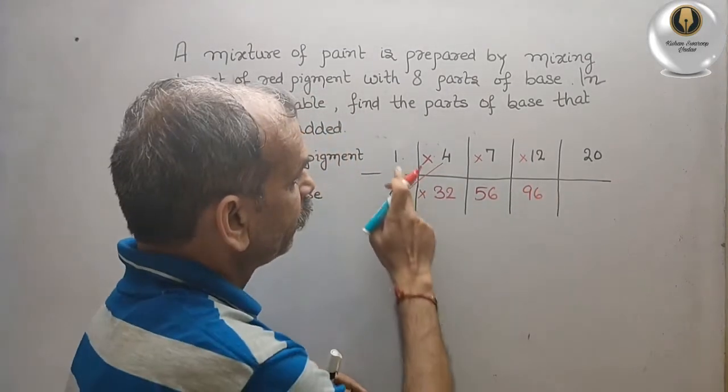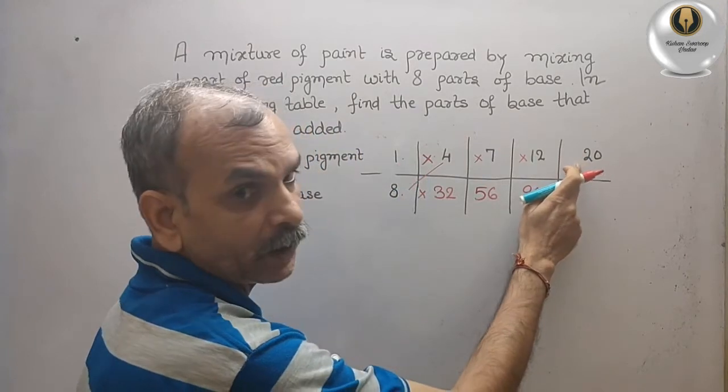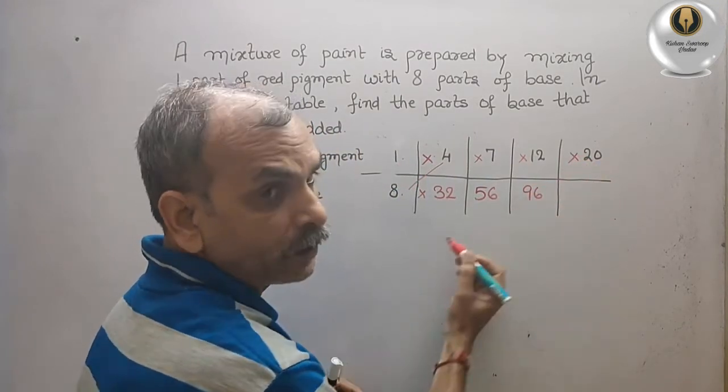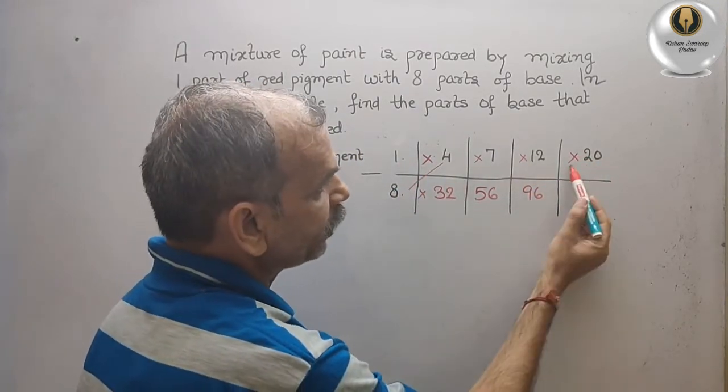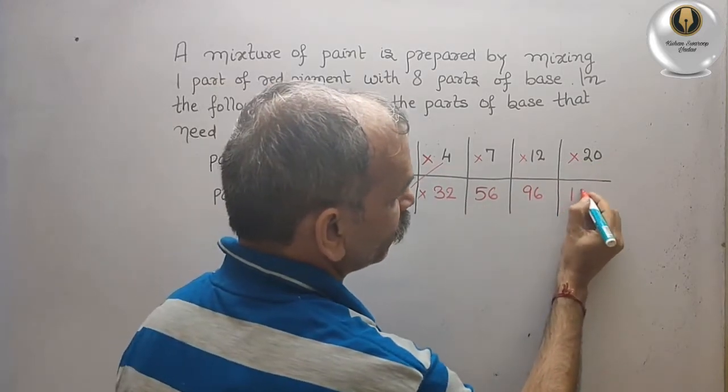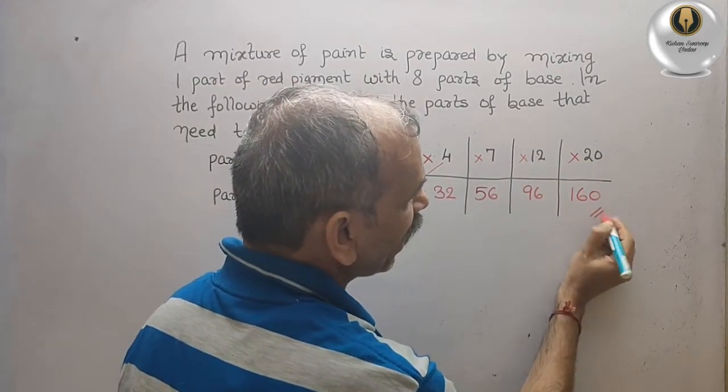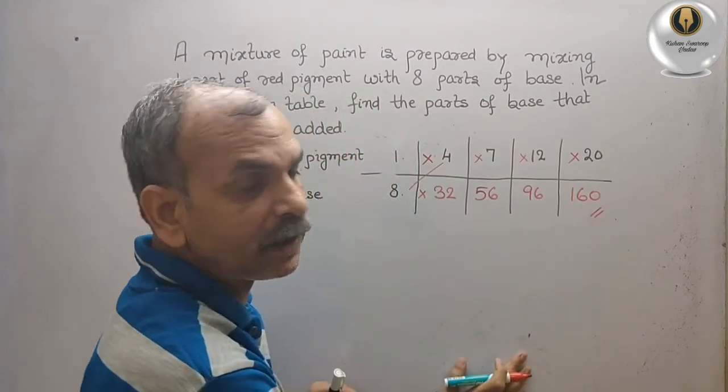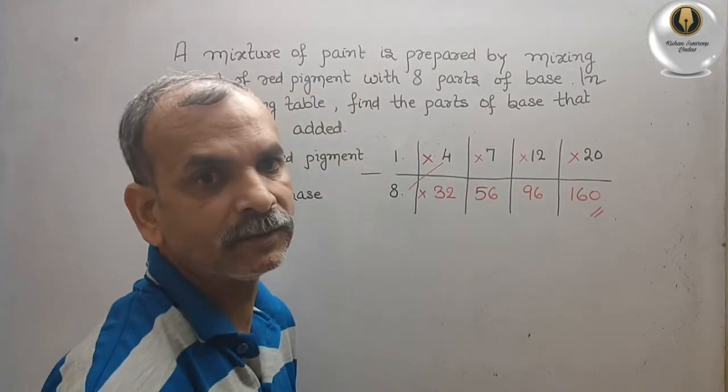Next, 1 times 20. Here you go for 8 times 20, which is 160. So these are your answers. This is how you do it.